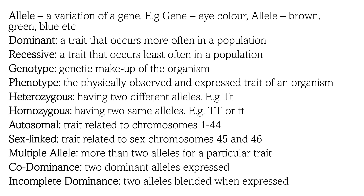The genotype refers to the genetic makeup of the organism, whereas the phenotype is a physically observed and expressed trait of an organism. A heterozygous organism may have two different alleles and a homozygous may have two of the same alleles. Autosomal traits relate to chromosomes 1 to 44, and sex-linked relate to the sex chromosomes 45 and 46. Multiple alleles are more than two alleles for a particular trait.